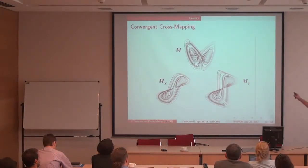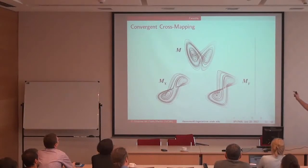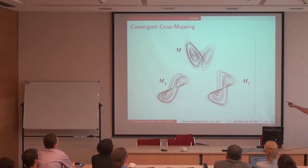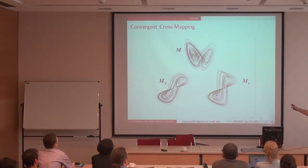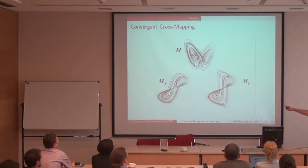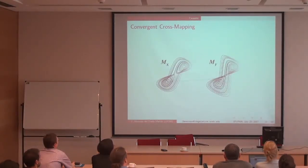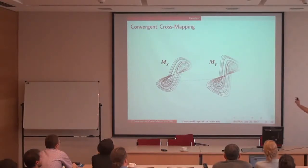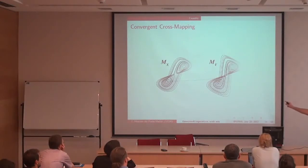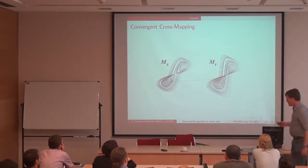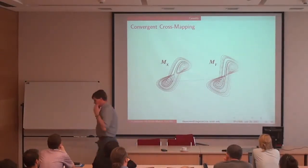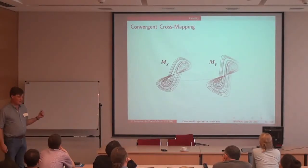Imagine you have an attractor M — the true attractor of our dynamical system. As I told you, with each single variable you can reconstruct the full properties of the attractor. So imagine you reconstruct the attractor based on X and based on Y. Both reconstructions contain many properties of the original attractor but are not identical — they are kind of different. The crucial thing is that each can be mapped to the original attractor, and you can also map directly from one shadow attractor to the other. There is a one-to-one correspondence between the points in both reconstructions.